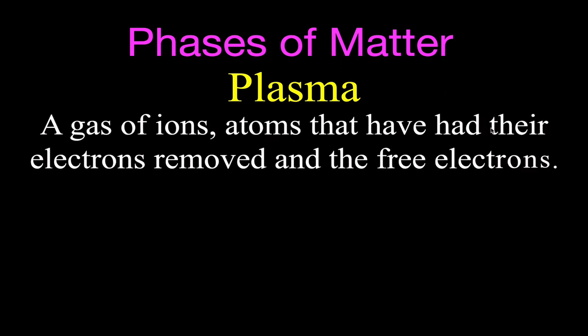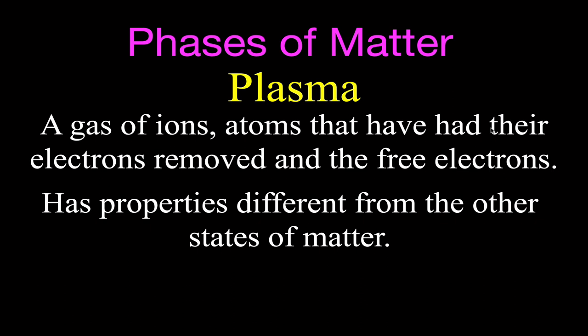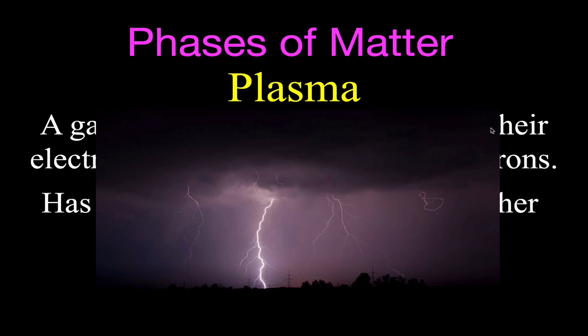There is another phase — somebody always raises their hand and says, what about plasma? Plasma is the fourth phase of matter. It has different characteristics than solid, liquid, and gas. A plasma is a gas of ions — atoms that have had their electrons removed — plus those free electrons. It's very high energy. We get plasma where there's a lot of energy, such as in lightning, which zaps air molecules and removes electrons. You also get it in neon signs and other high-energy places.